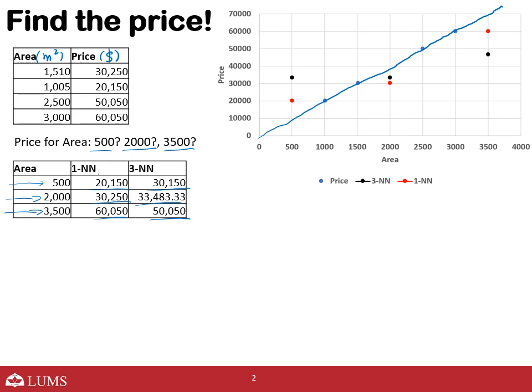Jo estimated values nearest neighbors se mili hain, especially edge cases mein, woh bahut buri hain. Jab hum regression ki baat kar rahe the, jo points hamare edge par aate hain — agar hum unhe predict karne ki koshish karein toh yahan par extrapolation karni par rahi hai dono sides par. Extrapolation mein aksar aap ka nearest neighbor is qism ke relationship ko miss kar deta hai, jaise yahan ek simple linear relationship hai. So extrapolation ke andar ghalti ho jati hai kyunke dono sides par points nahi hote.